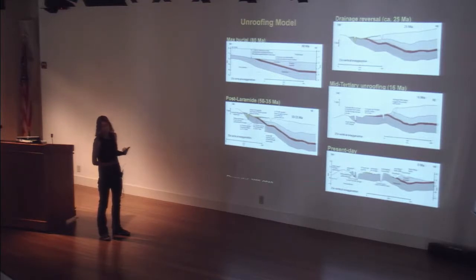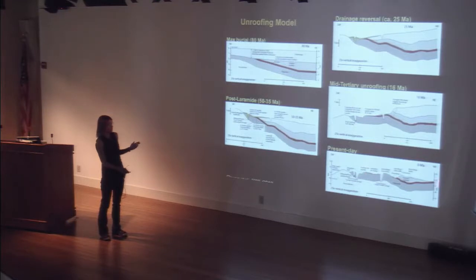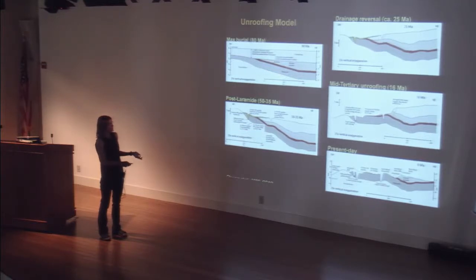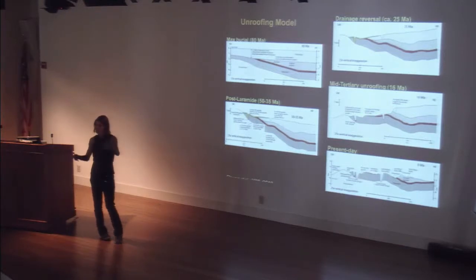The mid-Tertiary interval when the drainage reversal occurs is actually somewhat cryptic — there isn't much aggradation going on in the plateau so the record is largely absent. It is broadly when the Basin and Range locally begins to open up. In many reconstructions, including one from Moucha, the area that is uplifting more recently is on one side of the plateau. Based on the helium data from the canyon, I think we have evidence for substantial carving of parts of the canyon in the Laramide, which would imply kilometer-scale incision and therefore kilometer-scale uplift of this part of the plateau at that time.